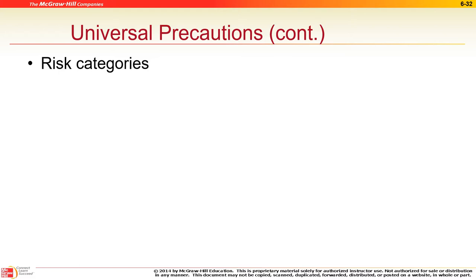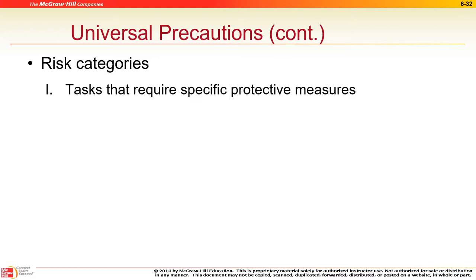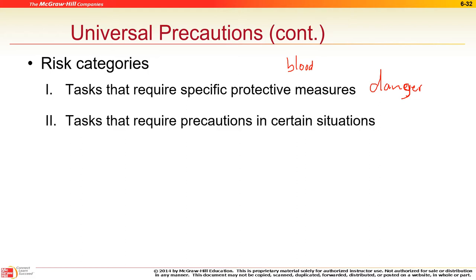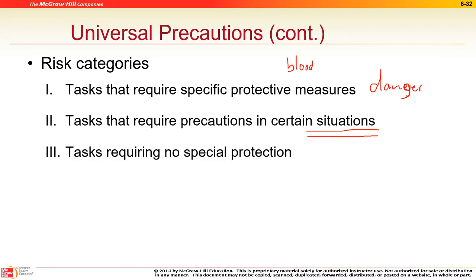Levels of risk: Level one means there is specific danger — for example, any time you're dealing with blood or bodily fluids, there's no tolerance, you must be wearing gloves. Level two is only in certain situations — low chance of spreading infection but you still should use protection. Level three has no required protection — for example, a physical examination with no broken skin means the doctor doesn't have to wear gloves.